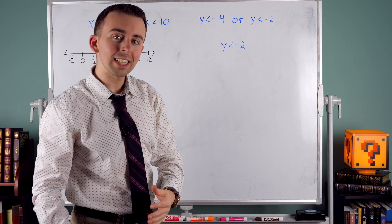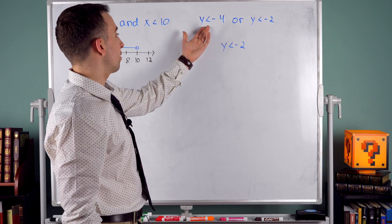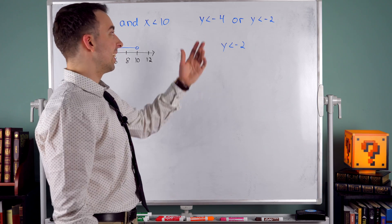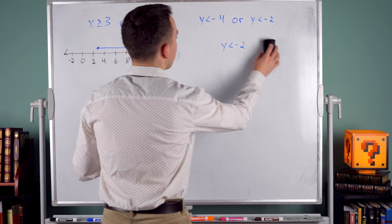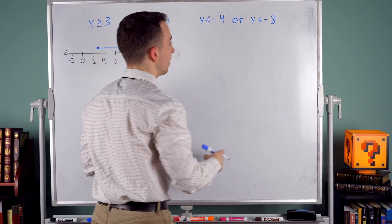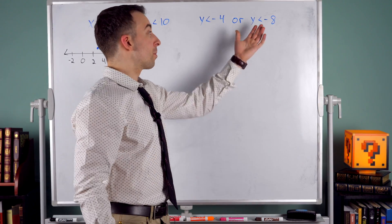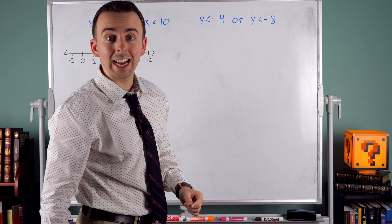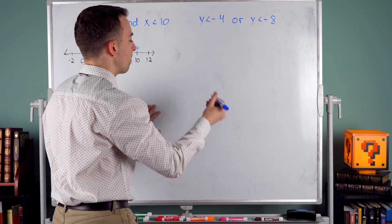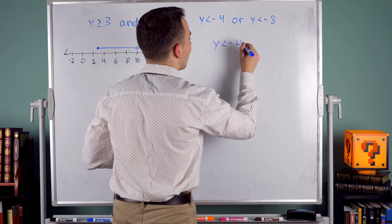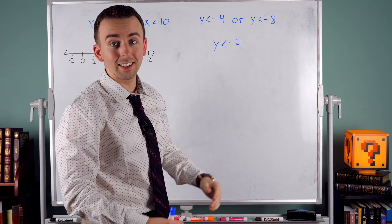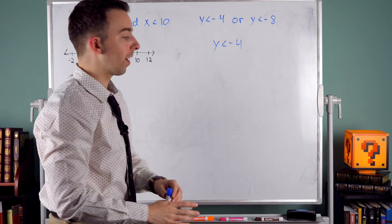In an OR inequality, in order to make it true, a number just has to make either one of the pieces true — or it could make both true. But a situation like that is kind of pointless. Here's another potential issue: what if we said y is less than negative 8? If a number is less than negative 8, it's certainly less than negative 4. So this inequality covers everything that the other does. There was no need to make this a compound inequality — we could have just said y is less than negative 4.